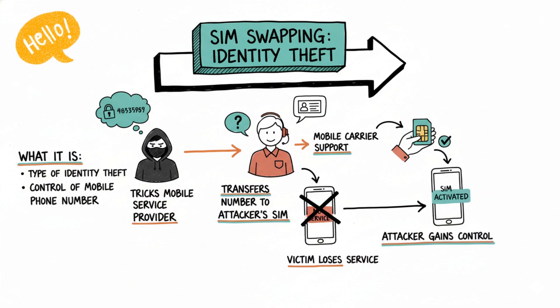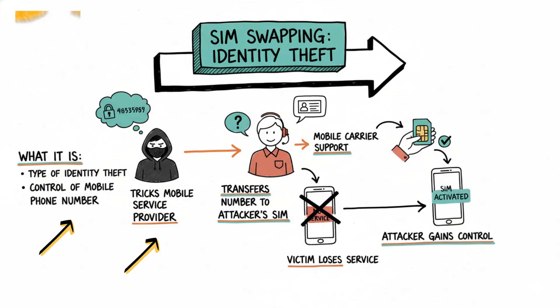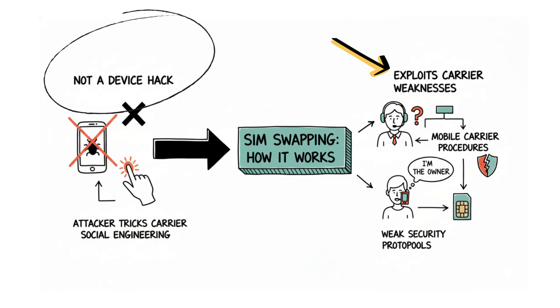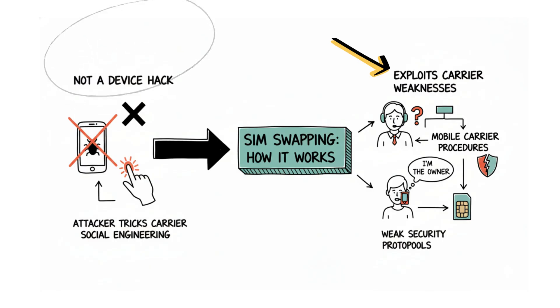Hello friends. SIM swapping is a type of identity theft where someone takes control of your mobile phone number by tricking your mobile service provider into transferring your number to a SIM card they control. Unlike malware attacks or device hacks, the attacker doesn't need to physically touch your phone. Instead, they exploit weaknesses in mobile carrier procedures.